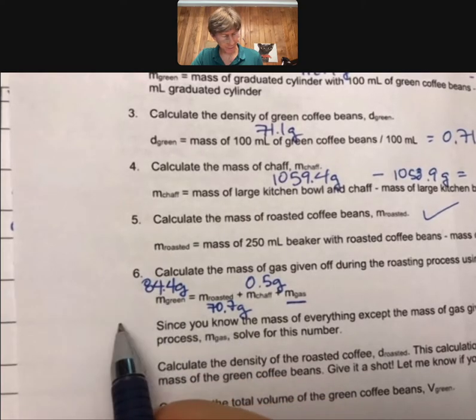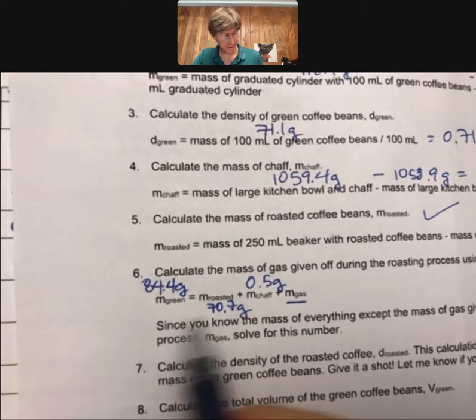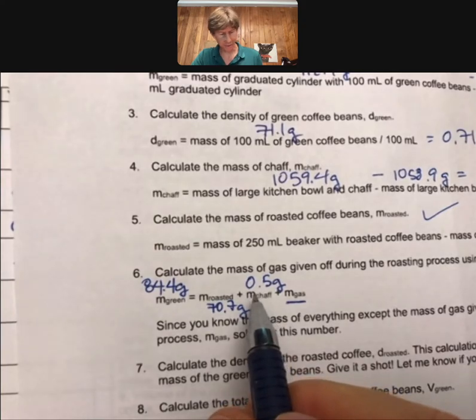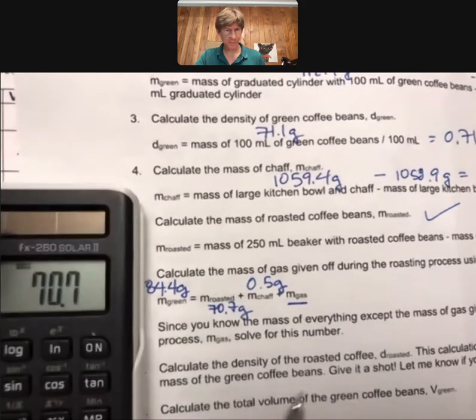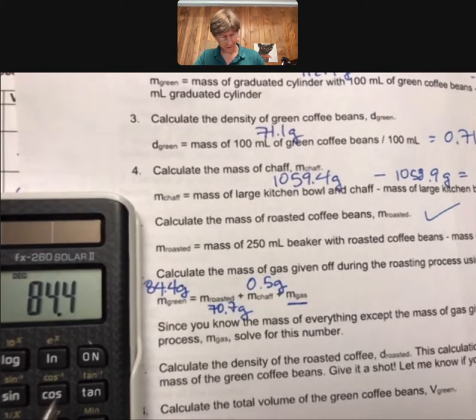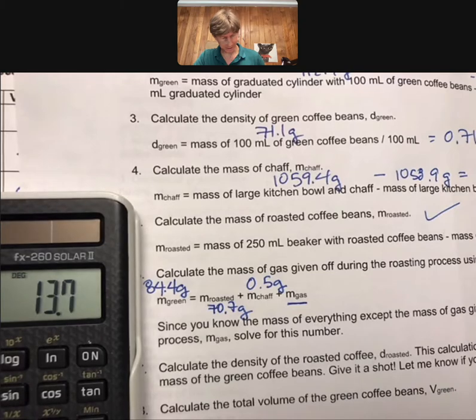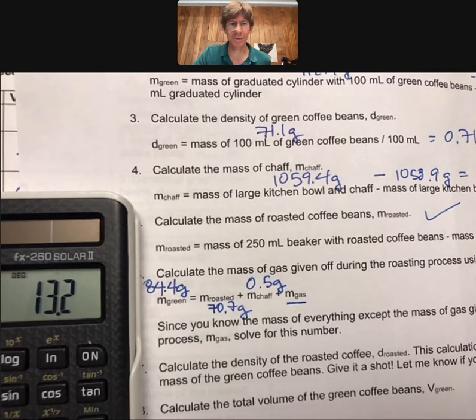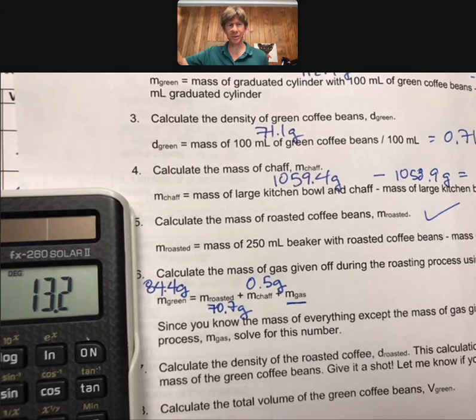subtract off the 70.7 from both sides, subtract off the 0.5 from both sides. So that amounts to 84.4 minus 70.7 minus 0.5. And I get 13.2 grams of gases that have been made due to reaction during the roasting process.